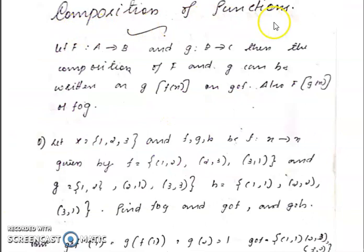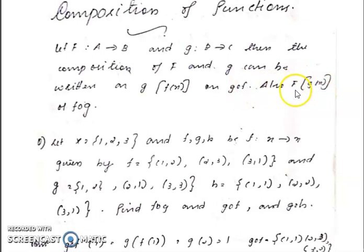Composition of functions: Let F be from A to B and G be from B to C. Then the composition of F and G can be written as G(F(x)), also written as G∘F. Similarly, F(G(x)) is written as F∘G.